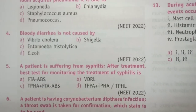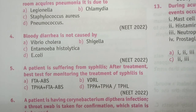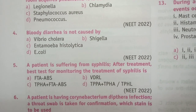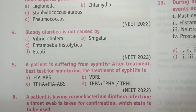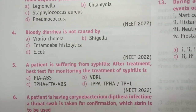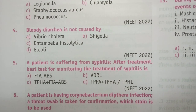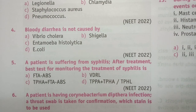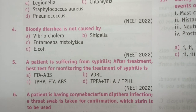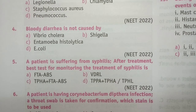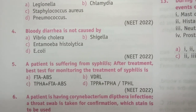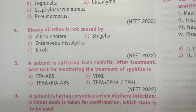Question 5: A patient is suffering from syphilis after treatment. The best test for monitoring the treatment of syphilis is: FTA-ABS, VDRL, TPHA plus FTA-ABS, TPPA plus TPHA, or TPHL. The answer to this question is VDRL.